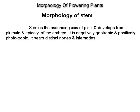Morphology of stem. Stem is the ascending axis of the plant and develops from the plumule and epicotyl of the embryo. It is negatively geotrophic and positively phototrophic. It bears distinct nodes and internodes.